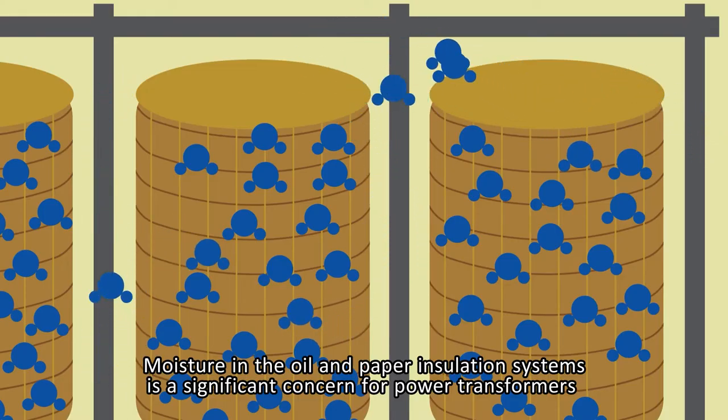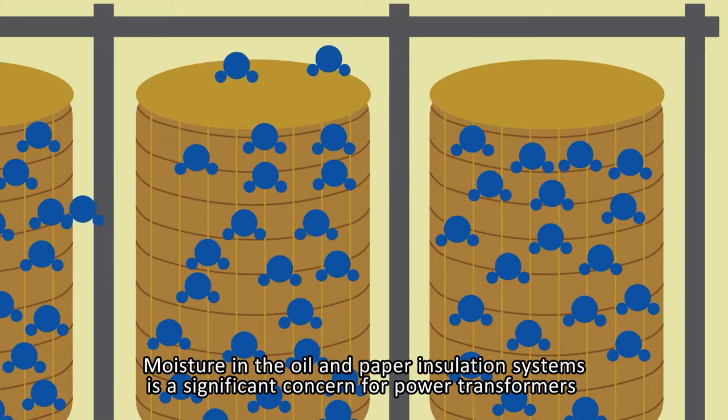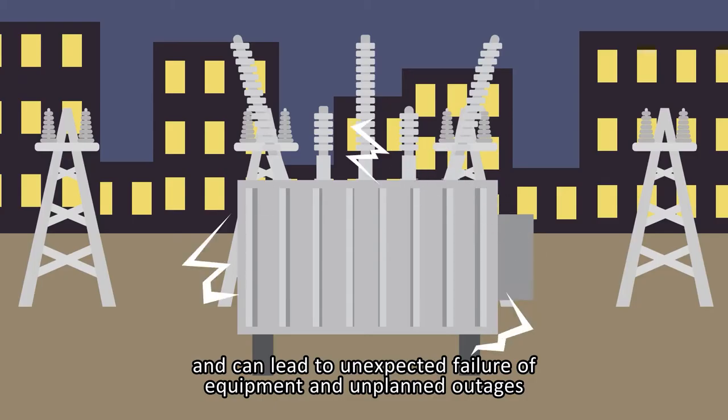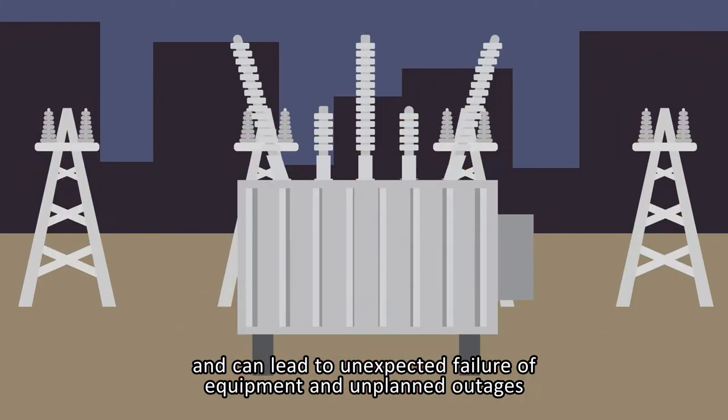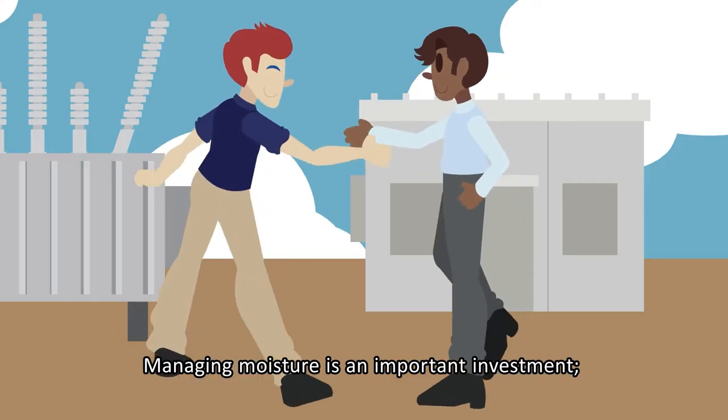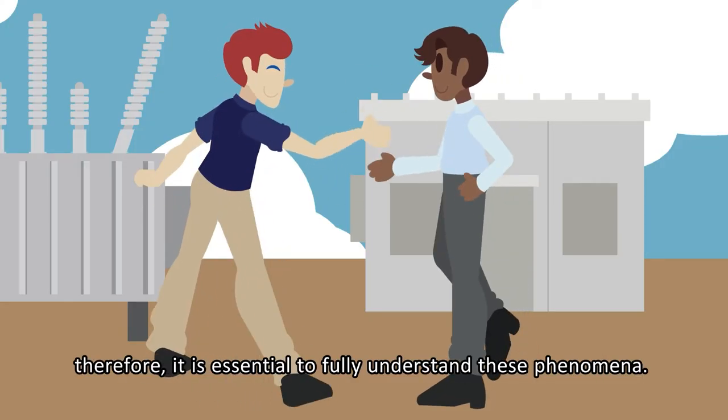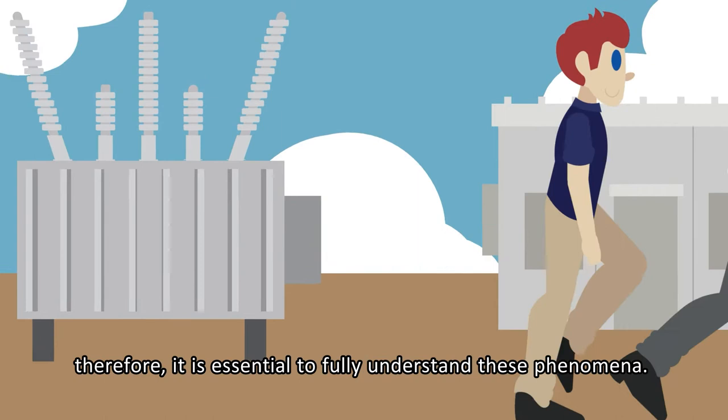Moisture in the oil and paper insulation systems is a significant concern for power transformers and can lead to unexpected failure of equipment and unplanned outages. Managing moisture is an important investment, therefore it is essential to fully understand these phenomena.